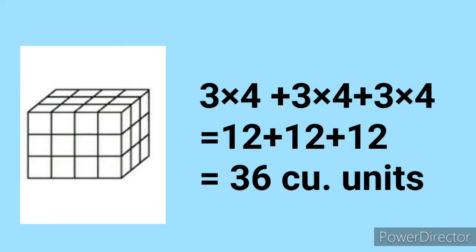To find the volume of this shape, we count the number of cubes. Here there are 3 layers, each one 4 by 3 in measurements. So 3 layers means 3 times 4 plus 3 times 4 plus 3 times 4, that equals 12 plus 12 plus 12 equals 36 cubic units.